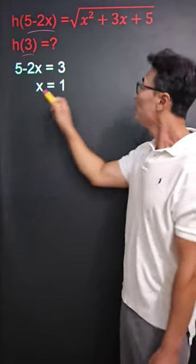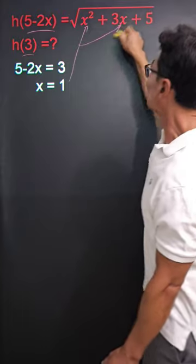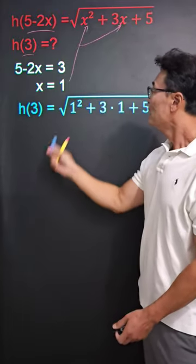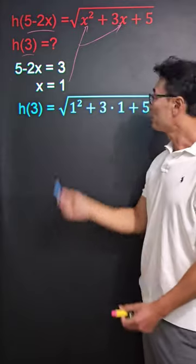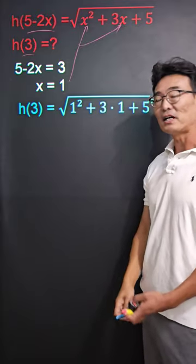and then take that 1, plug it into x of the function, where we get square root of 1 squared plus 3 times 1 plus 5.